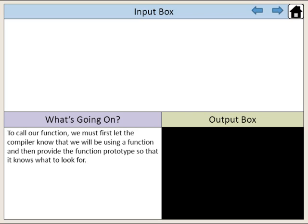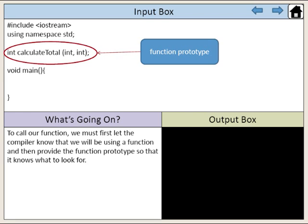To call our function, we must first let the compiler know that we will be using a function, and then provide the function prototype so that it knows what to look for. Here is the function prototype for our function calculateTotal.